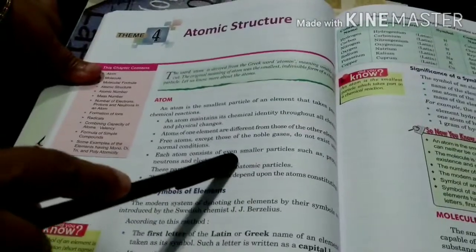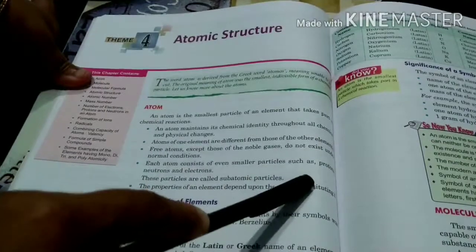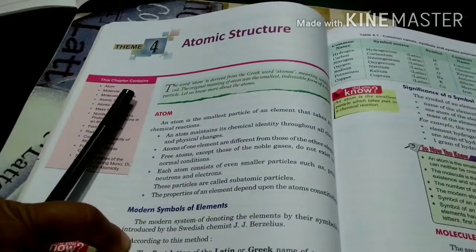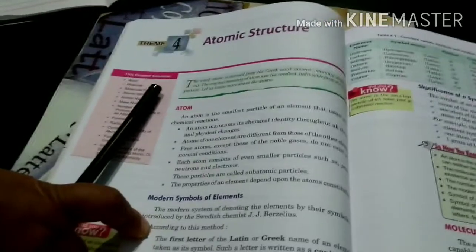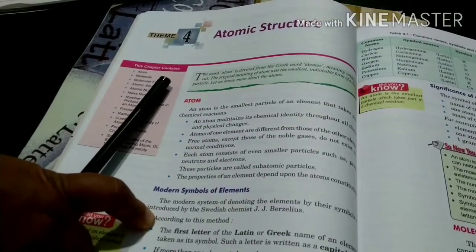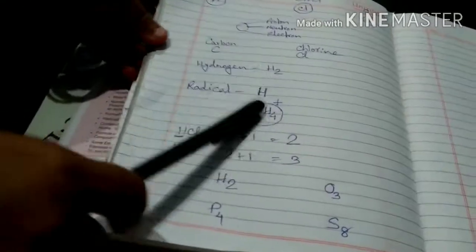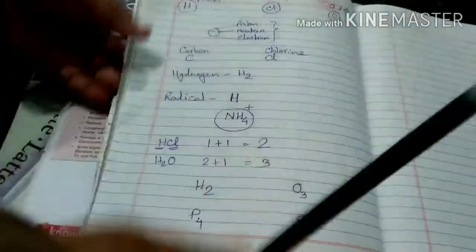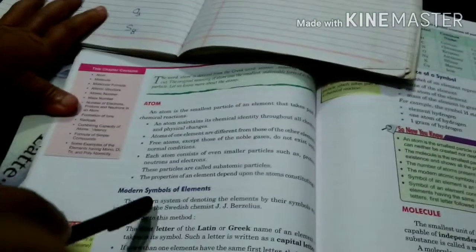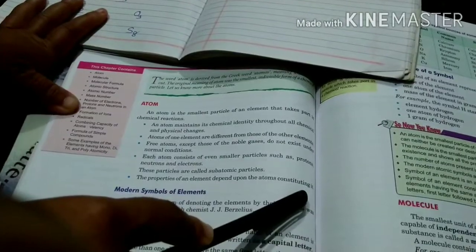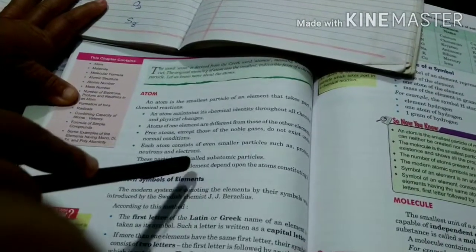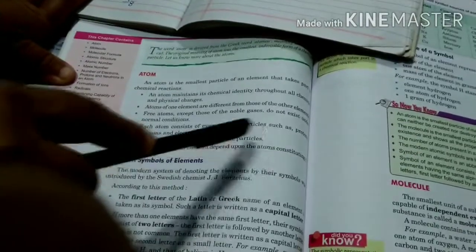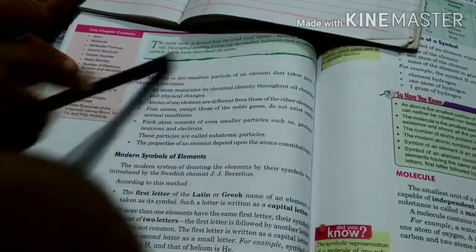Each atom consists of even smaller particles such as proton, neutron, and electron. Earlier it was said that atoms are the smallest particles which cannot be broken, but later on scientists came to know atoms can also be broken into smaller particles. They are called protons, neutrons, and electrons — subatomic particles. The properties of an element depend on its atomic constitution.